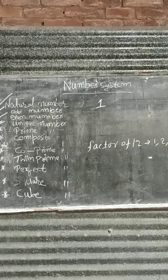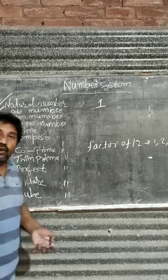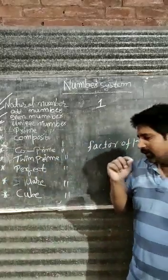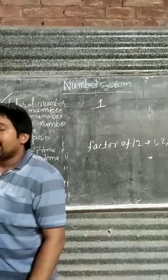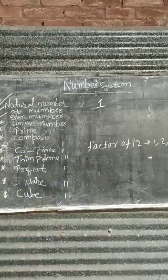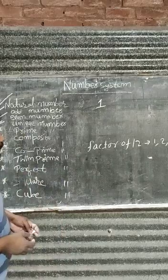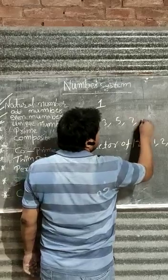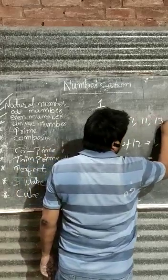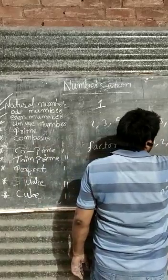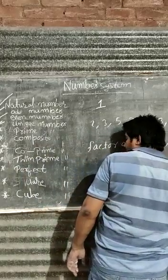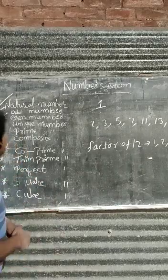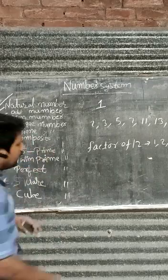A prime number is a natural number which has only two factors, then it is called prime number. For example, 2, 3, 5, 7, 11, 13, 17, 19. It means there are 25 prime numbers between 1 to 100.